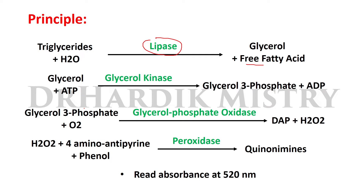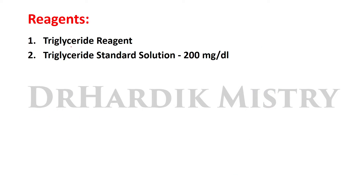Glycerol-3-phosphate, in the presence of oxygen and glycerol phosphate oxidase enzyme, is converted to DAP and hydrogen peroxide. This hydrogen peroxide reacts with 4-amino antipyrin phenol in the presence of enzyme peroxidase to form quinoneimine. We read the absorbance of this solution at 520 nanometers colorimetrically. That is the principle of this method.